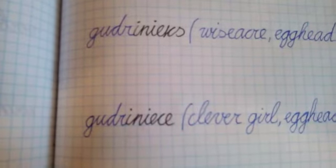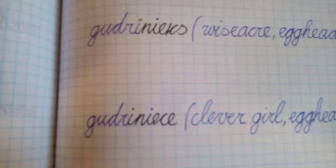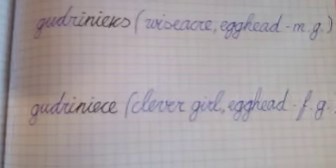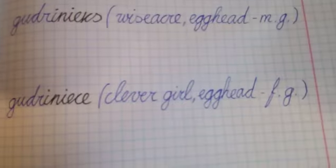But if female gender, gudriniece, adding iniece, it means a clever girl, egghead, female gender.